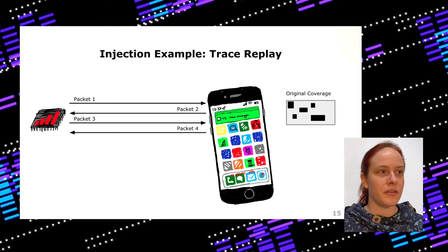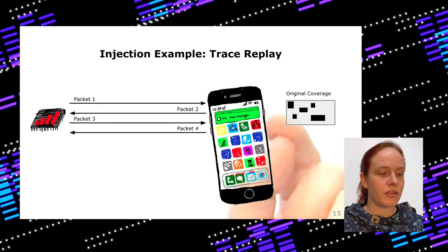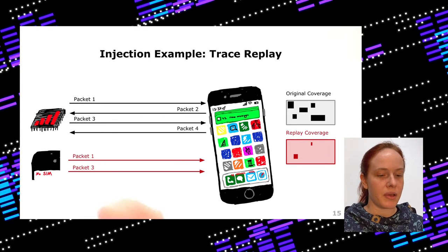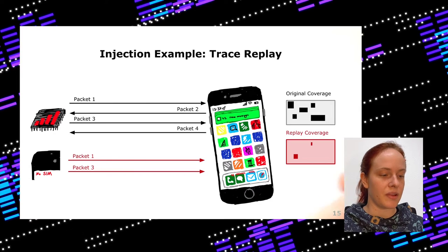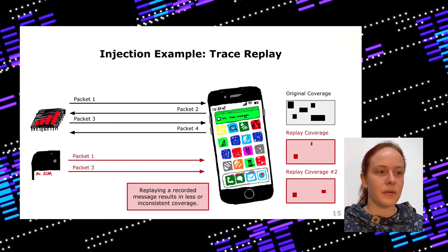This limitation shows even in a simple trace replay. A trace is something you record — say, during an active phone call you record all packets and observe coverage with Frida. In the second step you do injection, but you can only inject packets sent from the baseband to the smartphone, not the opposite direction, resulting in much less coverage. Even worse, if you do the same thing again you might be in a different state and observe different coverage — so replaying recorded messages results in less or inconsistent coverage.